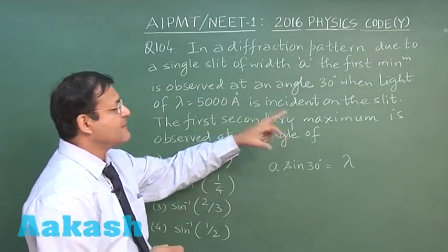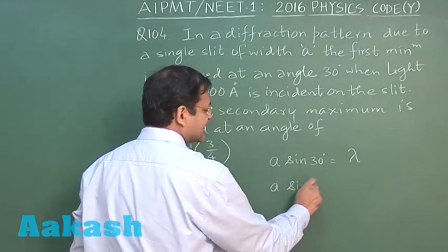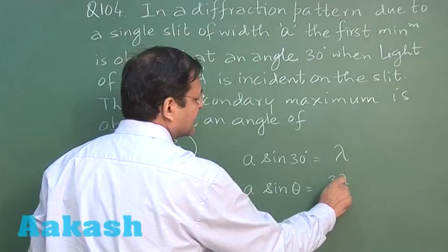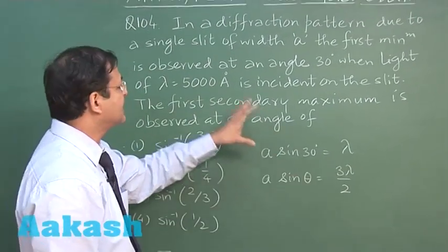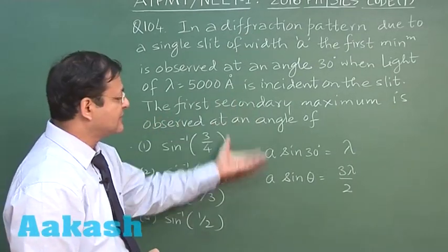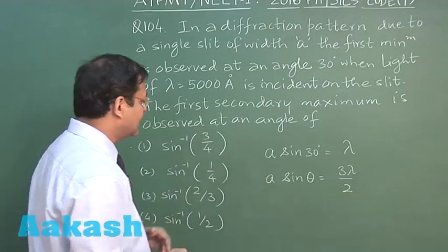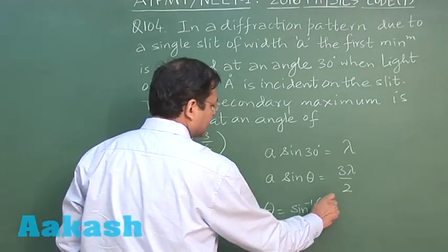Now the first secondary maxima, now what is the expression for secondary maxima. So this is a sin theta is equal to this time 3 lambda by 2, this is the expression you will be using for first maxima, secondary maxima which you say, the first secondary maxima is observed at an angle of. So simply you have these two equations, you divide and get the value of theta, theta as sin inverse 3 by 4.